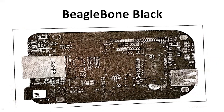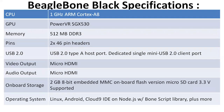The BeagleBone Black structure is similar to the Raspberry Pi, featuring a 5V power input, HDMI, USB connector, processor, and audio jack. If you look at the specifications, the CPU is 1 GHz ARM Cortex-A8. The GPU is a PowerVR SGX530. Memory is 512 MB DDR3.